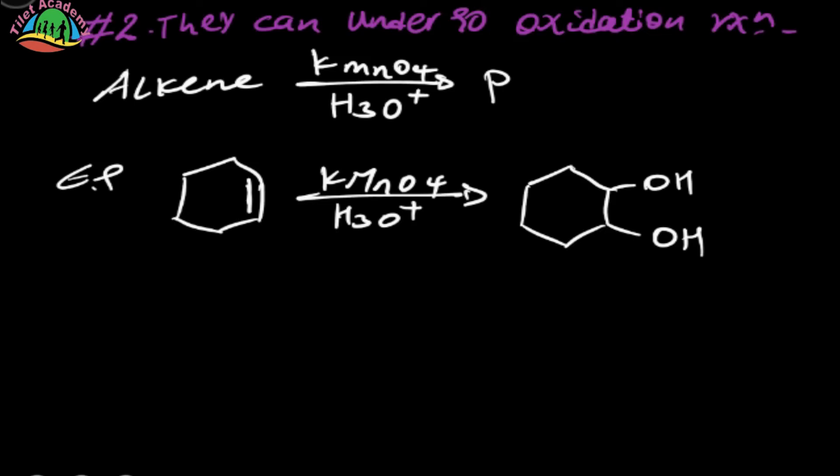They can also undergo oxidation reaction. Alkene can be oxidized by potassium permanganate KMnO4 in aqueous solution. In the oxidation reaction, the double bond is broken and OH groups are added to each carbon, forming a diol product.